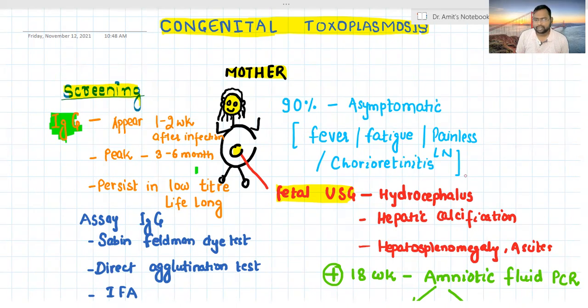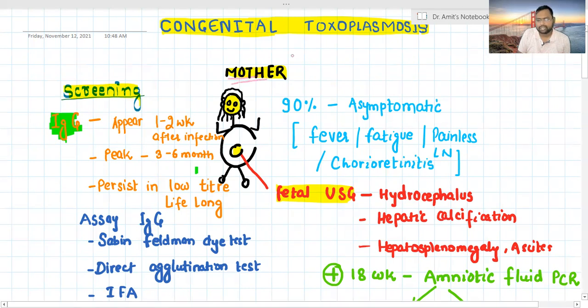I will not go into detail about the host. Let's start with how it affects the mother. If mother gets infected with toxoplasmosis gondii, which is the culprit, most of the 90% cases are asymptomatic. If it presents, then it presents with fever, fatigue, painless lymphadenopathy, along with chorioretinitis. These are the presentations in mother.